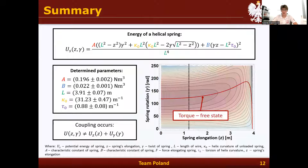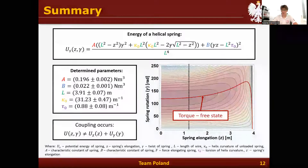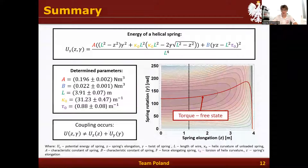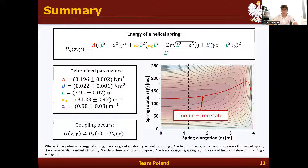Knowing all five parameters of a spring, we could calculate the potential energy of the spring at any position — for any spring rotation and spring elongation. Because this potential energy cannot be separated into independent terms, the coupling in our system occurs.